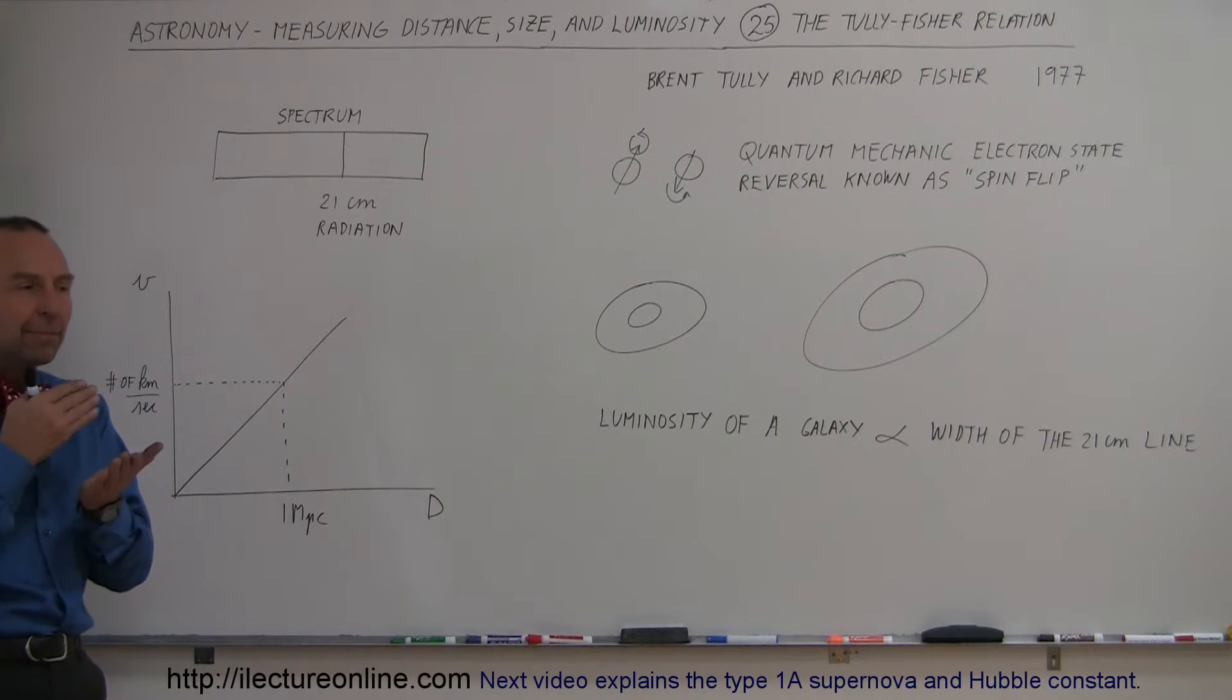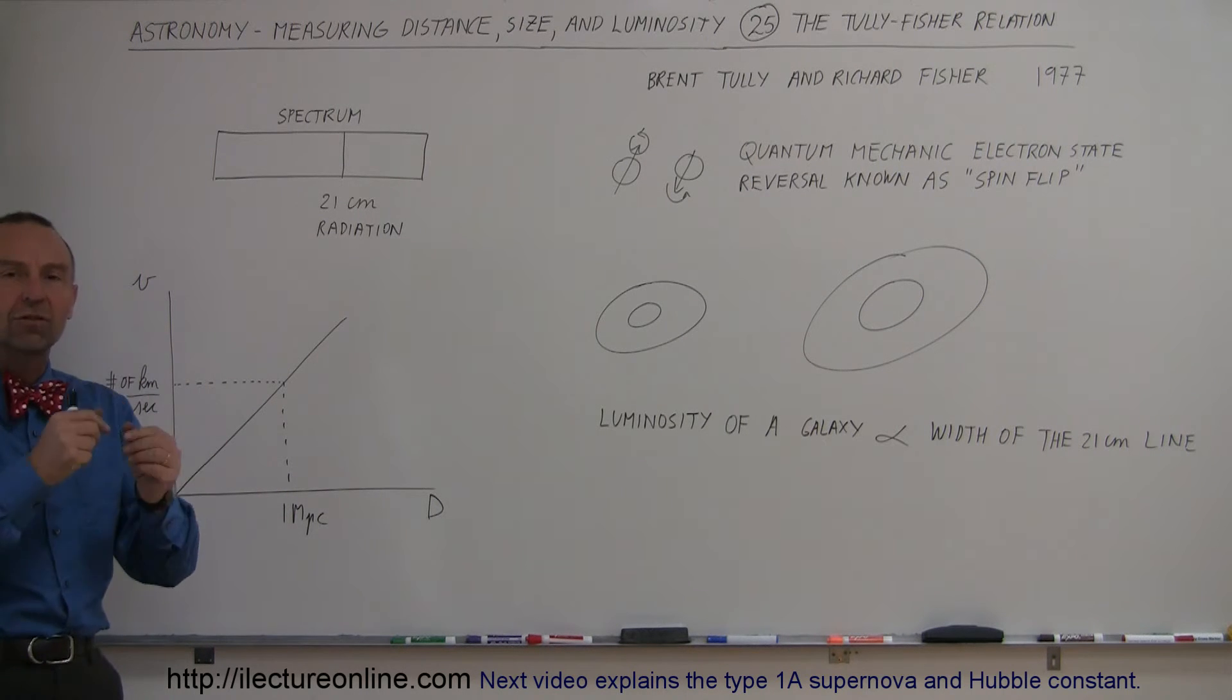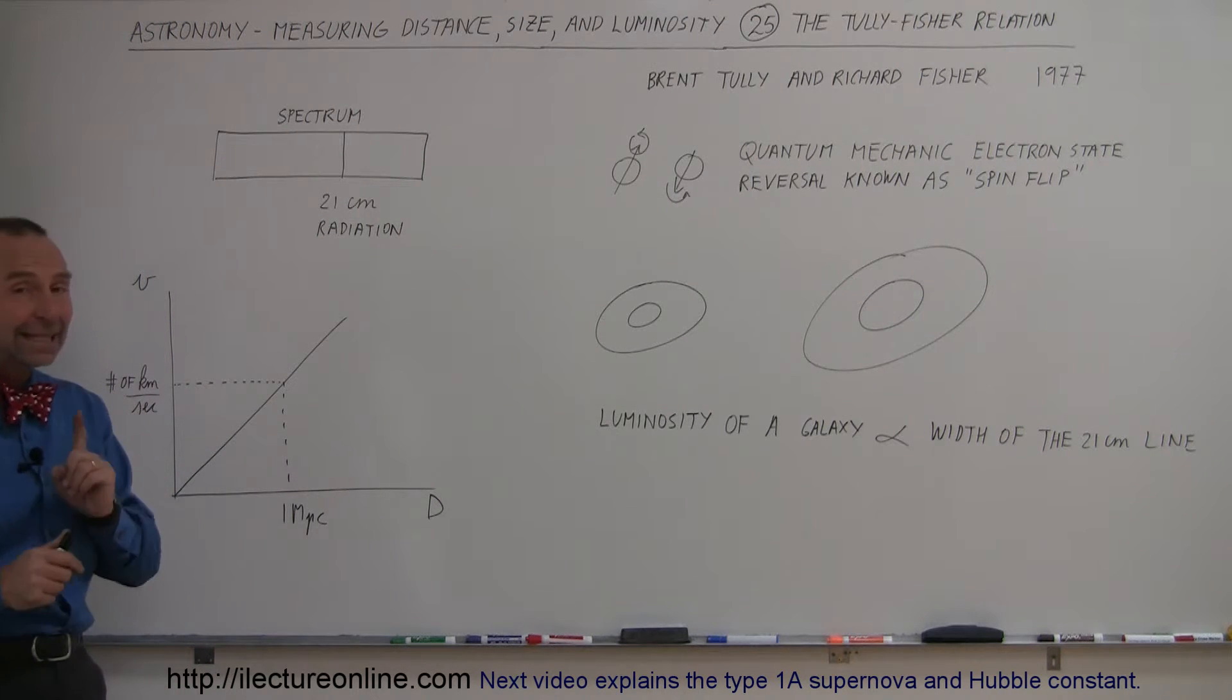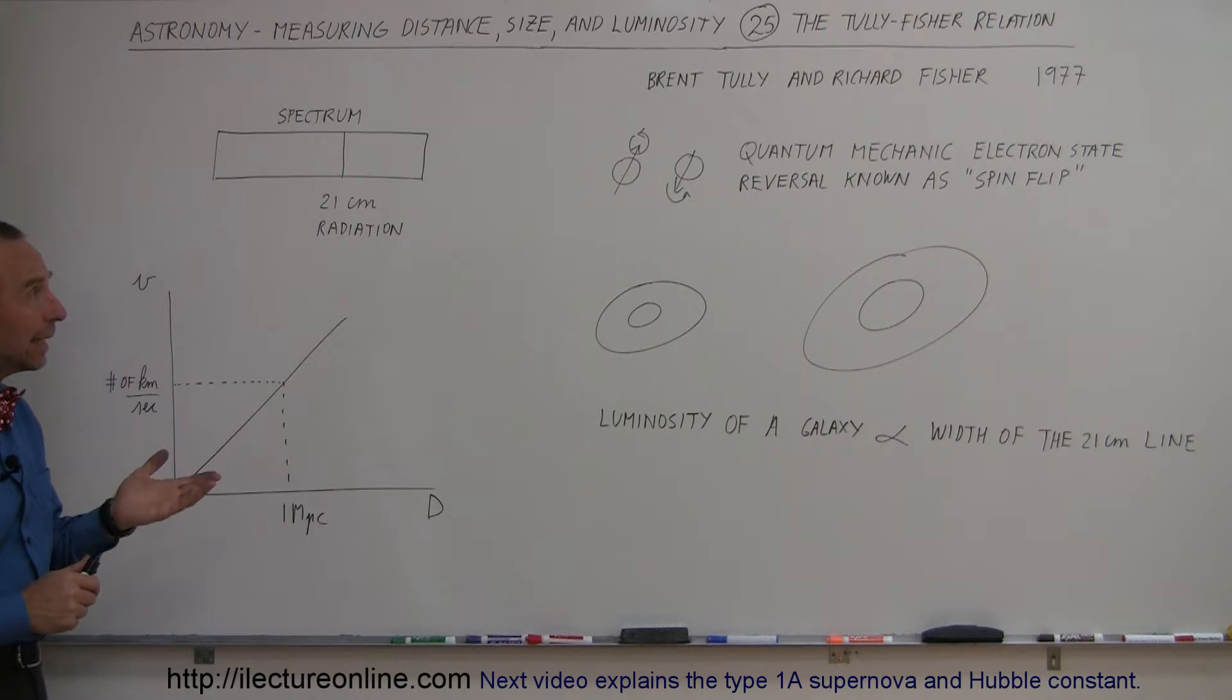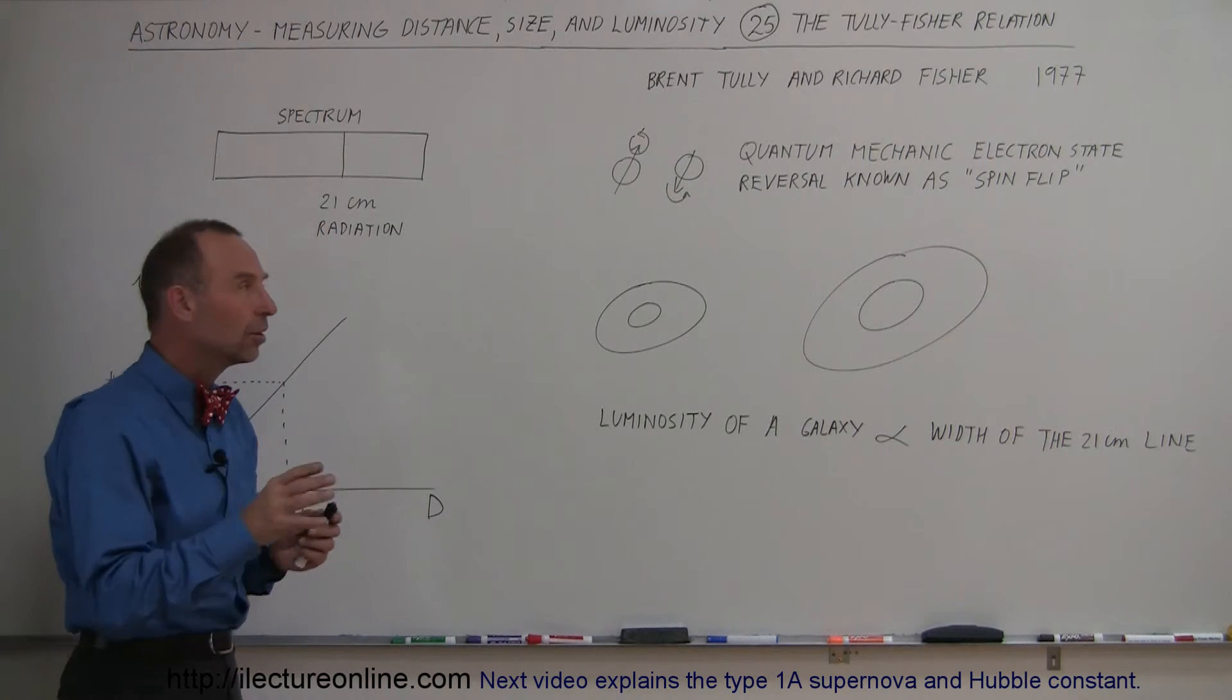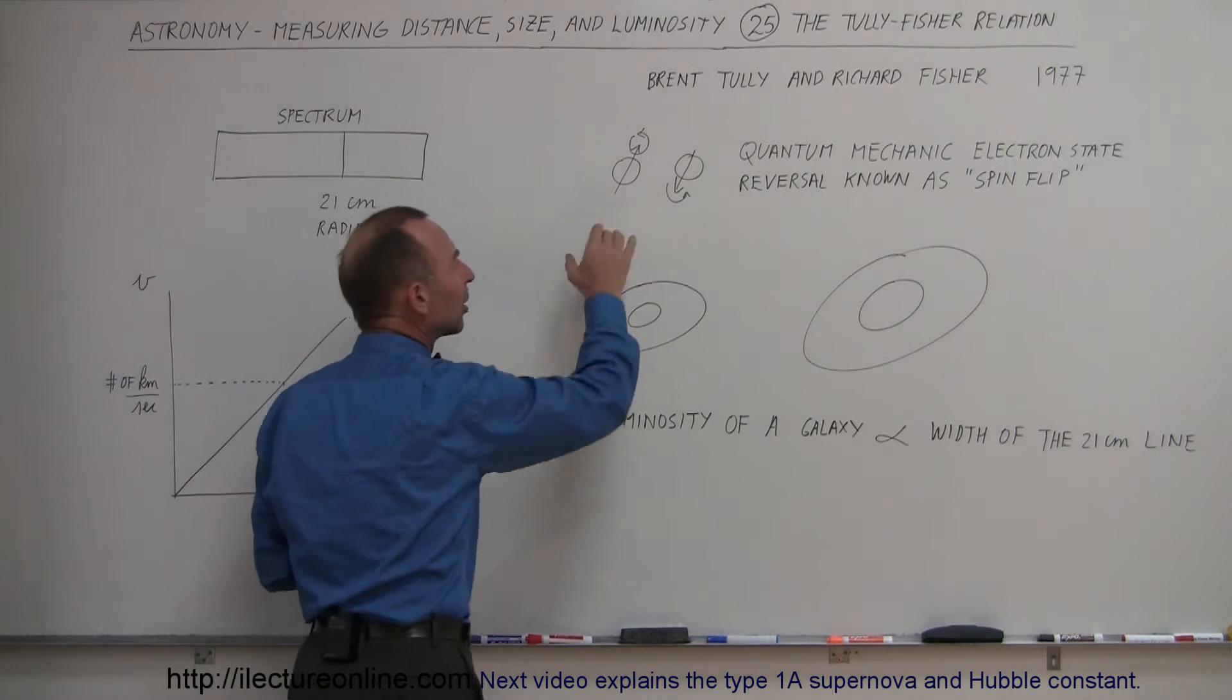But how do we find an independent way of measuring the distance to those galaxies? Well, back in 1977, Brent Tully and Richard Fisher came up with this ingenious concept where they studied the spin-flip radiation coming from galaxies.